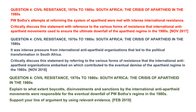The third question was taken from the November 2019 paper and reads as follows: Explain to what extent boycotts, disinvestments and sanctions by the international anti-apartheid movements were responsible for the eventual downfall of PW Botha's regime in the 1980s. Support your line of argument by using relevant evidence.